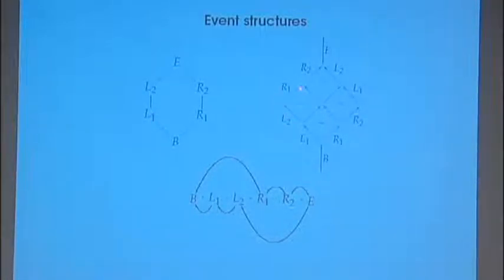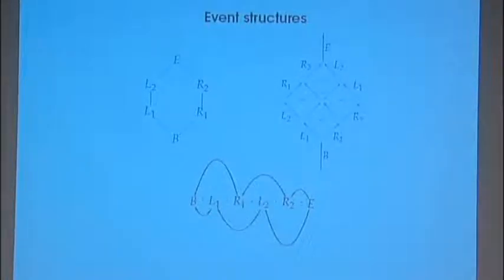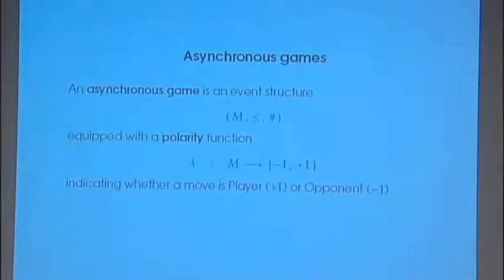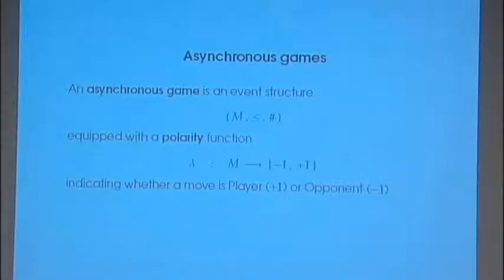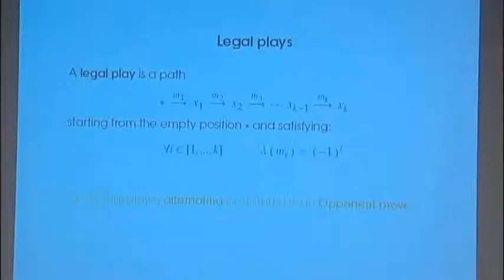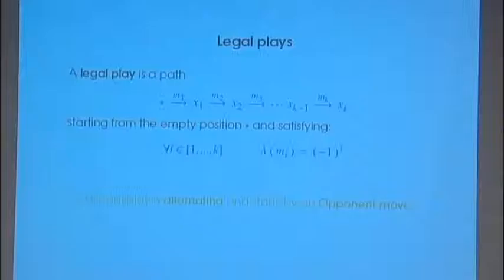An innocent strategy is a play which plays according to the view. When you played a long path of moves, a long play, you are kind of amnesic — you don't remember everything. You play according to what you remember — this is your view. The extraordinary thing is that innocent strategies — these amnesic strategies — compose well. It's like you put two amnesic people, they discuss together, and the composite is still amnesic in exactly the same way. It's kind of miraculous. The proof that innocent strategies compose well is a very subtle proof.